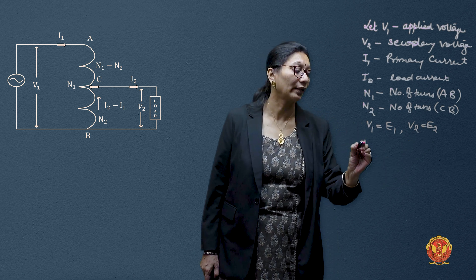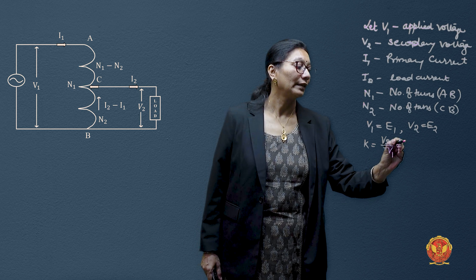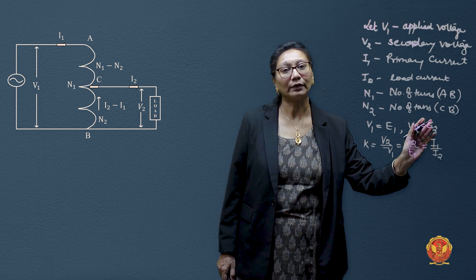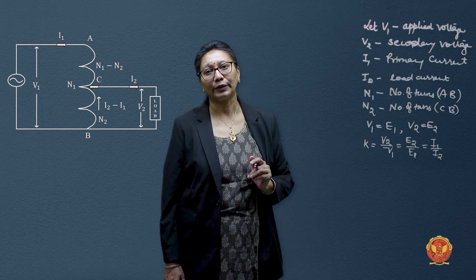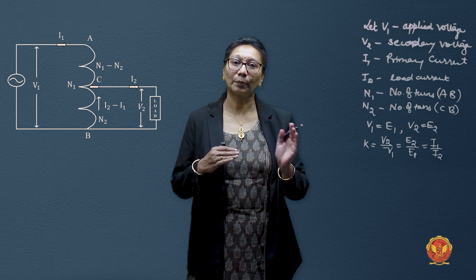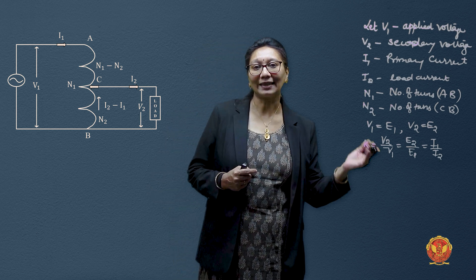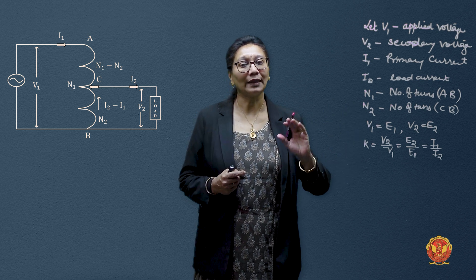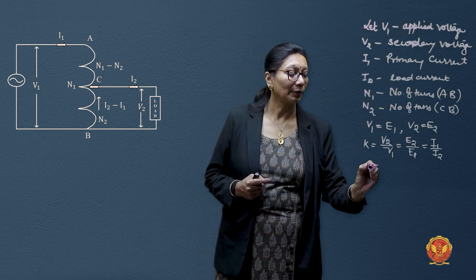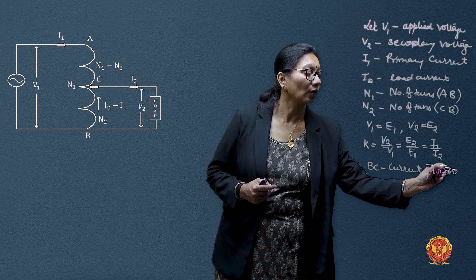The transformation ratio can be written the same as for two-winding transformers: K = V2/V1 = E2/E1 = I1/I2. However, the secondary ampere-turns are in phase opposition to the primary ampere-turns. So current I2 is in phase opposition with I1, and when the secondary voltage is less than the primary voltage, I2 would be greater than I1. The resulting current flowing through section B-C is the difference of I2 and I1.